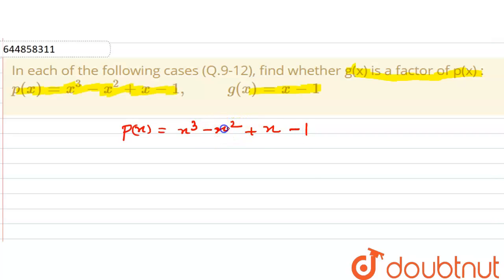Now we know that x minus 1 will be the factor of px if p of 1 will be equal to 0. So according to the factor theorem, one polynomial is the factor of another polynomial only if the remainder is 0.